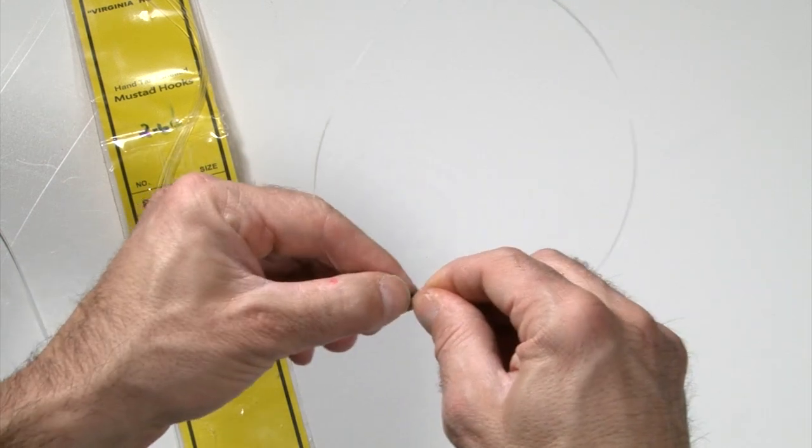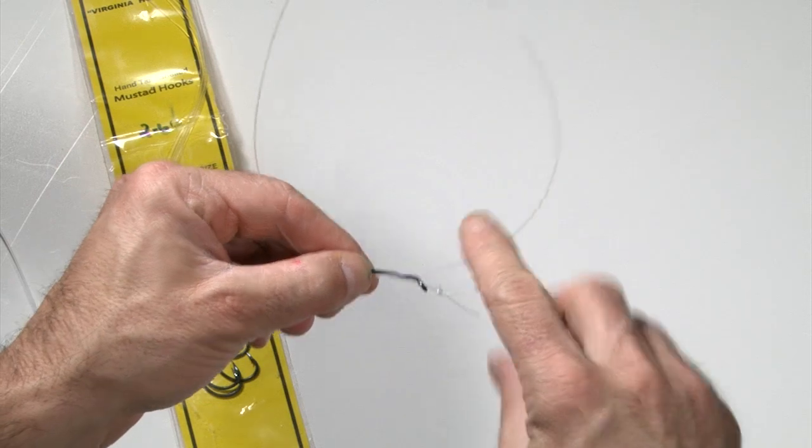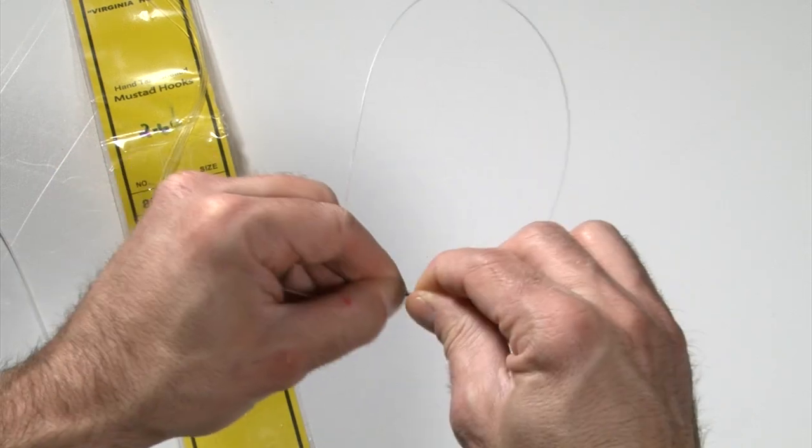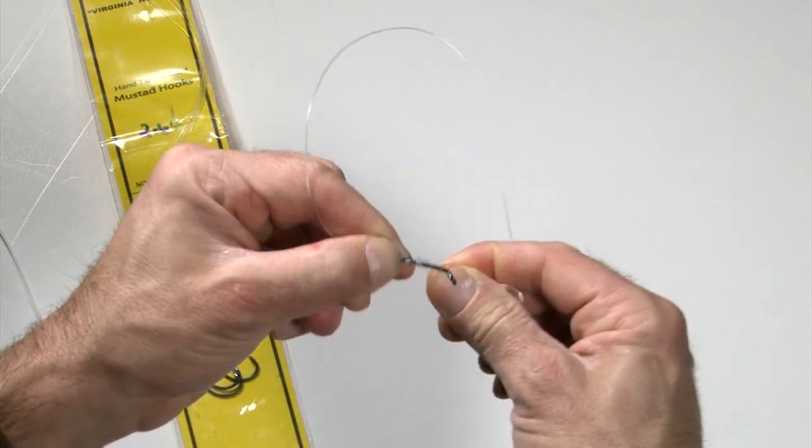Now take this end of your loop and wrap it over itself forward. One, two, three, four.